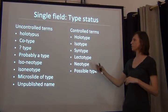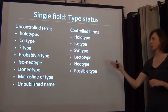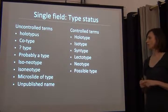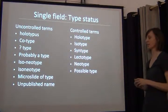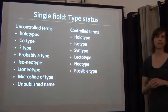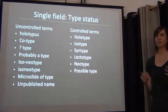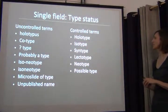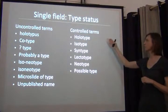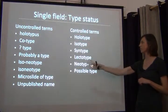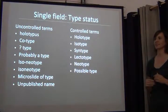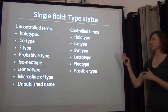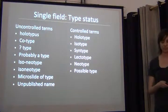These are all very subjective terms that don't really correspond to an official type status. You could have the same term entered two different ways — 'isoneotype' with a dash, or just 'isoneotype.' 'Microslide of type' is more of a specimen status than a type status, and 'unpublished name' is relevant but not a type status in itself. If you use controlled terms, you force users to standardize to a controlled set of vocabulary, which makes things much easier up front rather than having to go back and clean up all those fields.